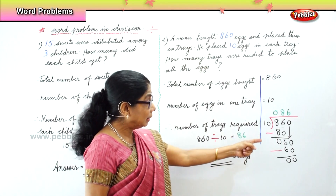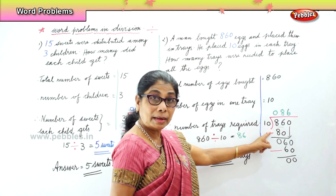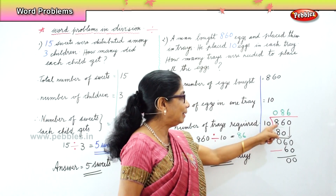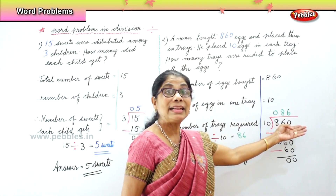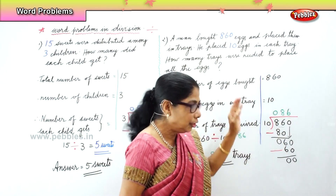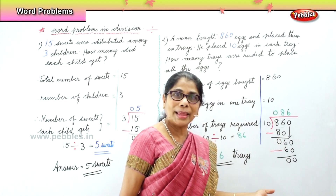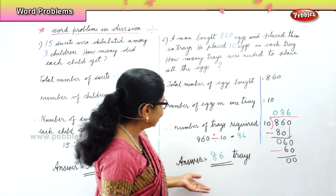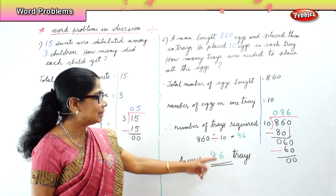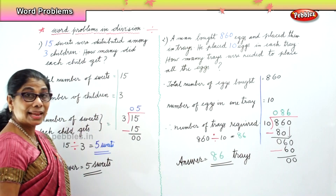Now, the divisor multiplied by the quotient — 86 into 10 is 860 — gives you the dividend. The quotient times the divisor gives you the answer, so you know your answer is right. 86 trays are needed to place 860 eggs. We learnt to do word problems in division.